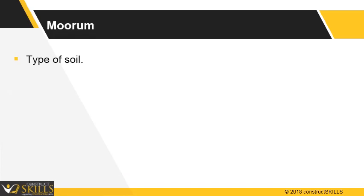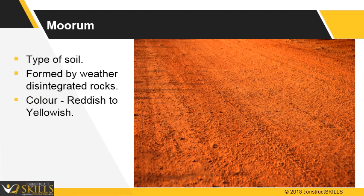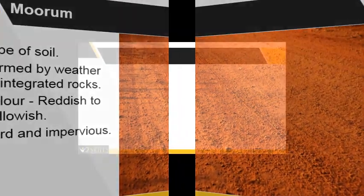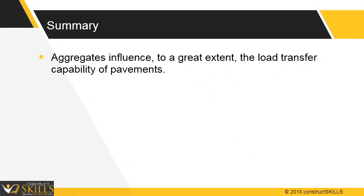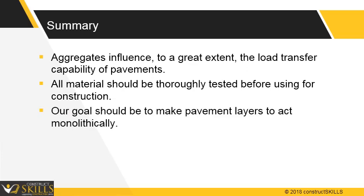Murum: a type of soil which is particularly used for road work. It is usually reddish to yellowish in color. When compacted, it forms a hard and impervious surface. Aggregates influence, to a great extent, the load transfer capability of pavements. All material for construction should be thoroughly tested before using. Our goal should be to make the road pavement layers act monolithically.